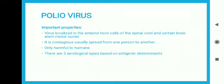We will discuss some important properties related to poliovirus. This virus localizes in the anterior horn cells of the spinal cord and certain brain stem motor nuclei.